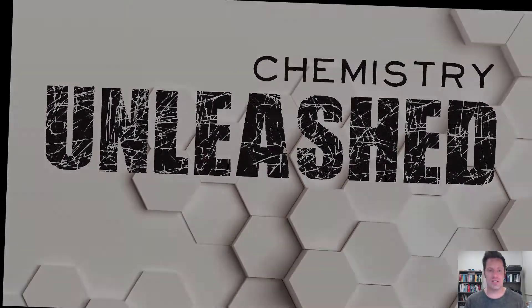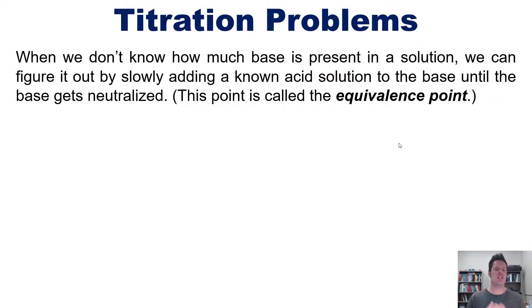We now move on to titrations. When we don't know how much base is present in a solution, we can actually figure that out by slowly adding a known acid solution to the base until the base gets neutralized. Now that neutralization point is called the equivalence point.